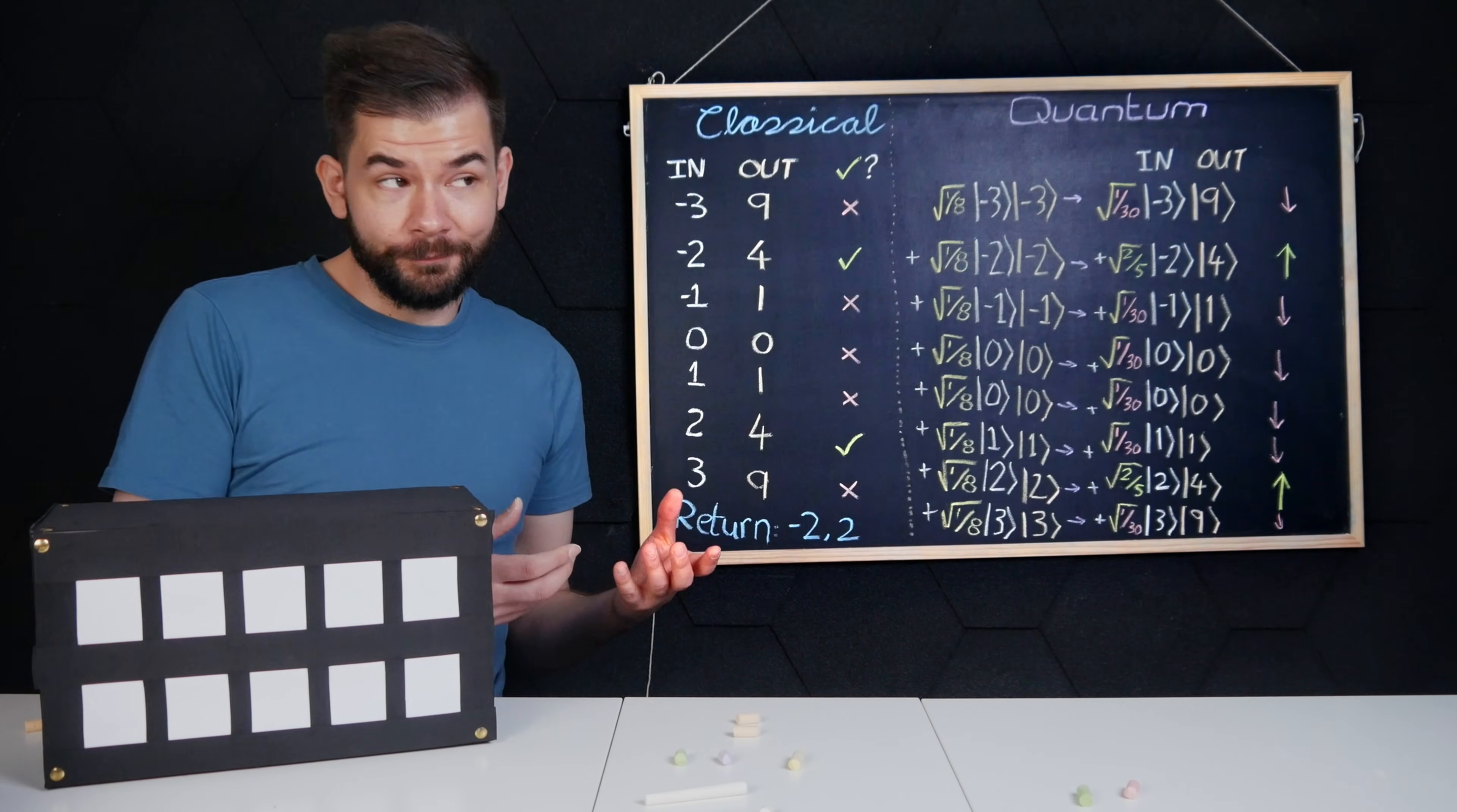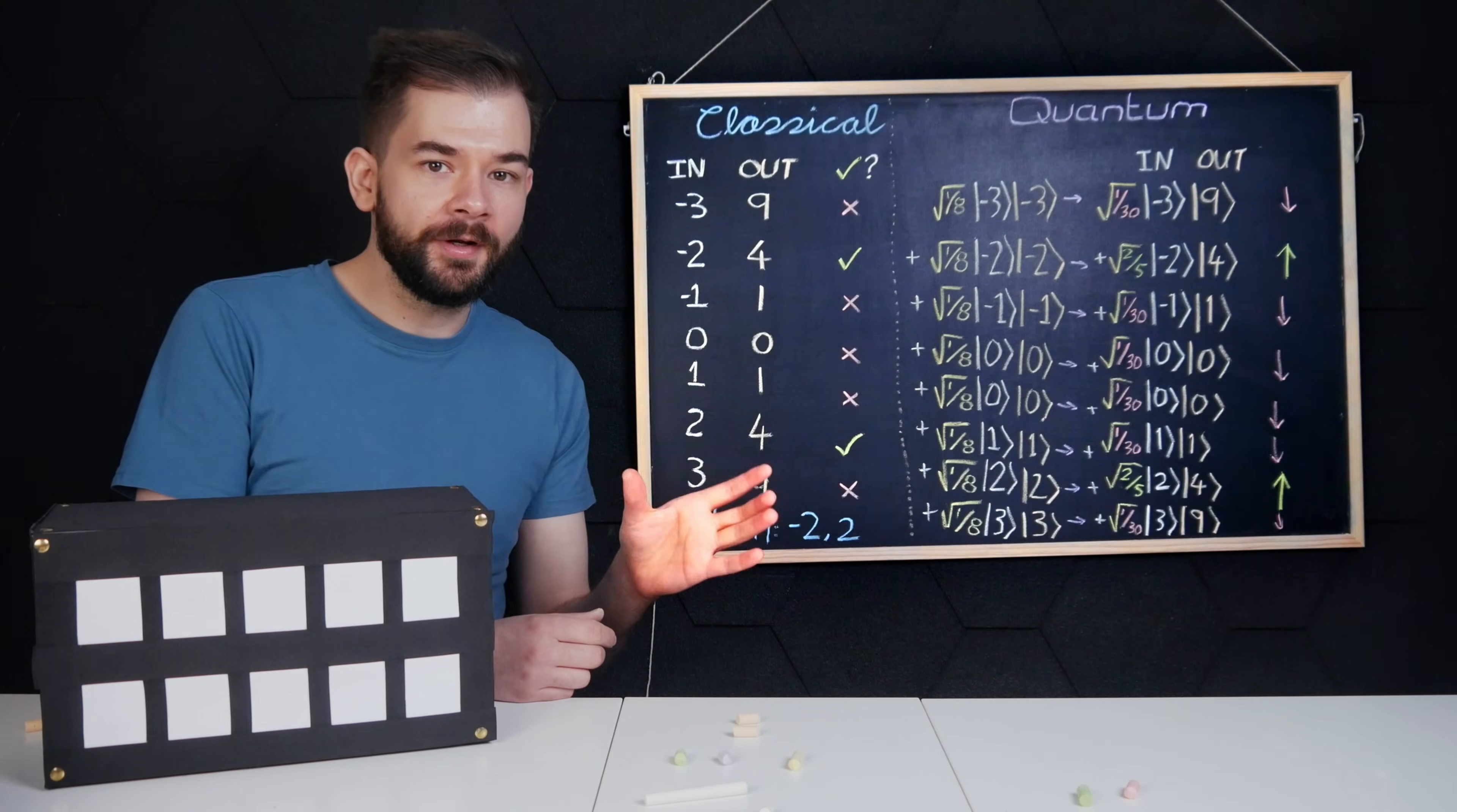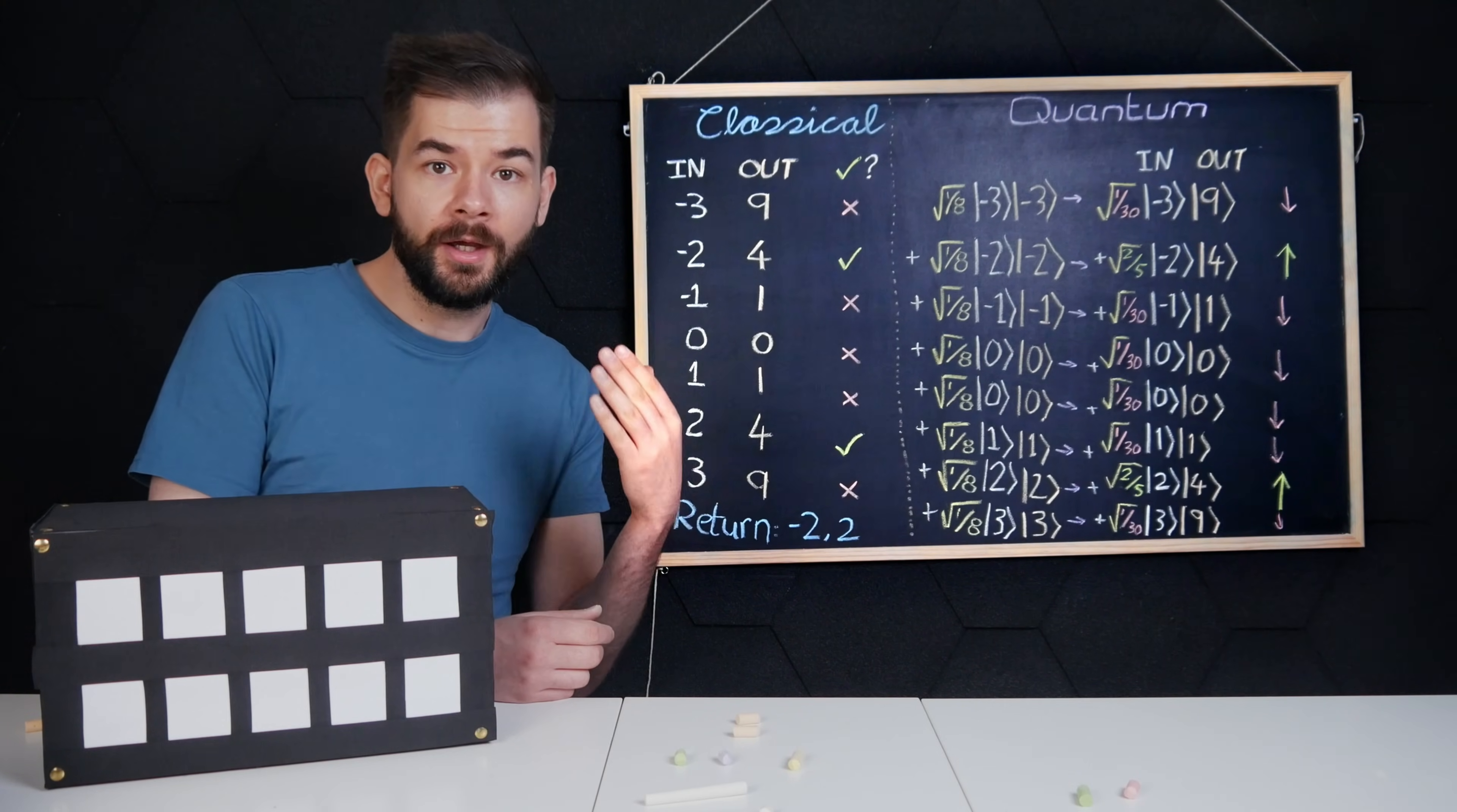As fortune would have it, or misfortune depending on how you look at it, another powerful amirite function is called a quantum Fourier transform, which is used as part of Shor's algorithm to crack RSA and other current cryptographic standards. Thanks for watching.